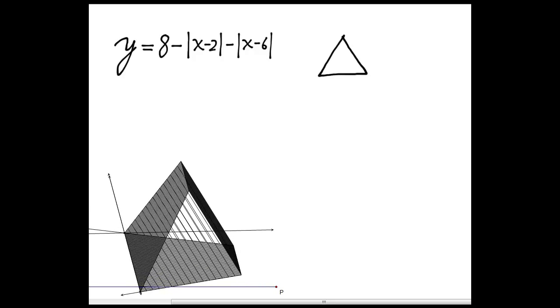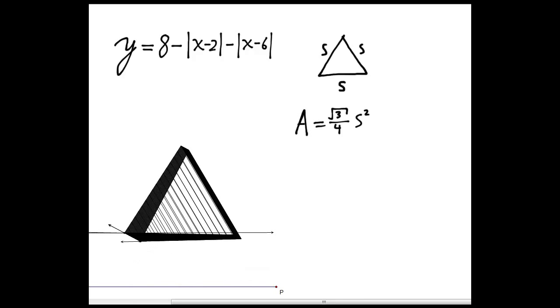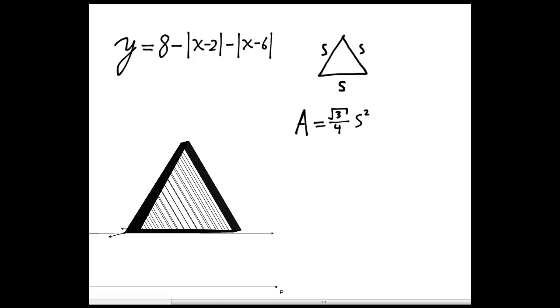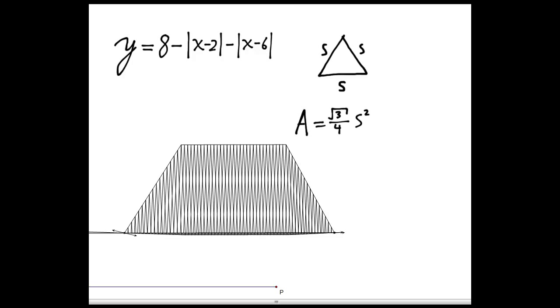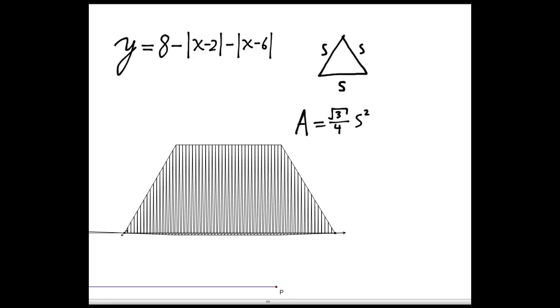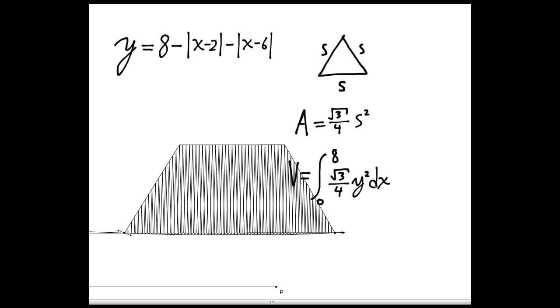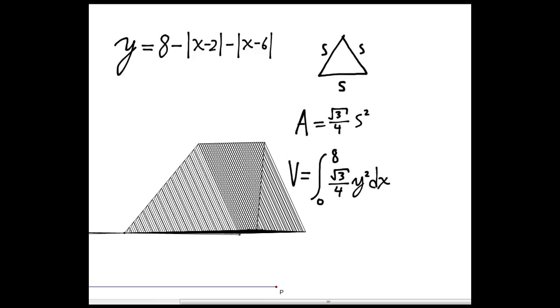The area of an equilateral triangle is square root of 3 over 4 times the length of a side squared, so you can use that to figure out the cross-sectional area of each slice, again multiply it by dx, and you integrate from 0 to 8.